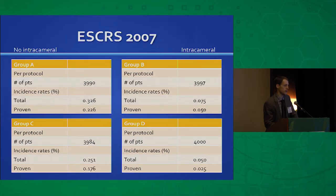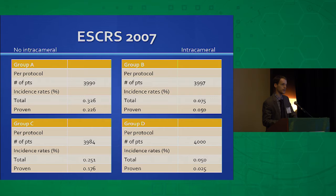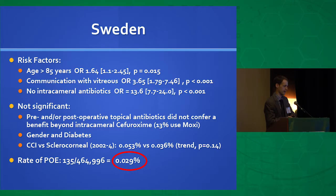The ESCRS study grouped cases into A, B, C, and D. Groups A and C did not have intracameral antibiotic injections, whereas B and D did. It was also separated by perioperative antibiotics — given 1 hour, 30 minutes, and 5 minutes before surgery or not. They did not find a significant difference with perioperative antibiotics, only whether or not intracameral antibiotics were given, which showed a significant reduction in endophthalmitis rates.